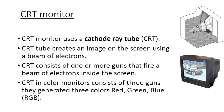The CRT tube creates an image on the screen using a beam of electrons. CRT consists of one or more guns that fire a beam of electrons inside the screen. CRT in color monitors consists of three guns, and these guns generate red, green, and blue — or RGB — colors. The other colors are generated with a combination of these three colors.